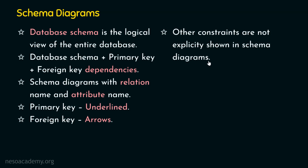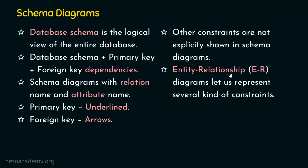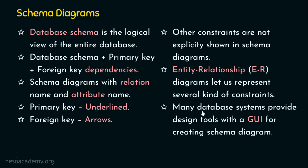This is one of the drawbacks of having schema diagrams. We can represent the logical view of the database along with the primary key and foreign key constraint dependencies, but other constraints cannot be explicitly shown. If that's the case, do we have any alternatives? Yes, we have entity relationship diagrams, simply ER diagrams, and these ER diagrams let us represent several kinds of constraints. Also, many database systems provide design tools with a graphical user interface — a GUI — for creating schema diagrams.